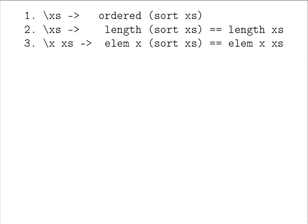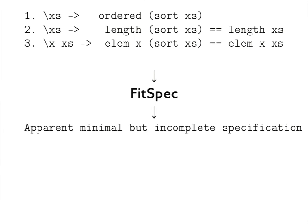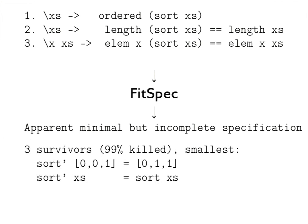FitSpec reports this as an apparently minimal but incomplete specification. Why is it incomplete? Of the mutants tested, three survivors pass the tests, and the smallest one is reported. This is a wrong implementation of `sort`, but it still passes the tests.